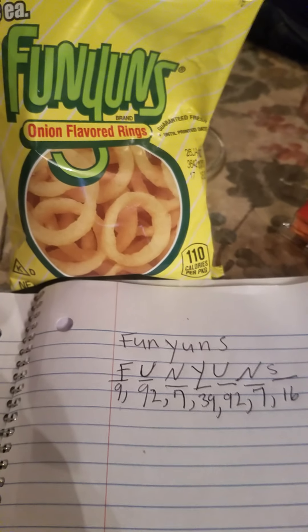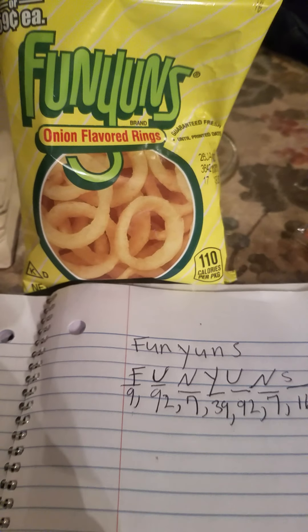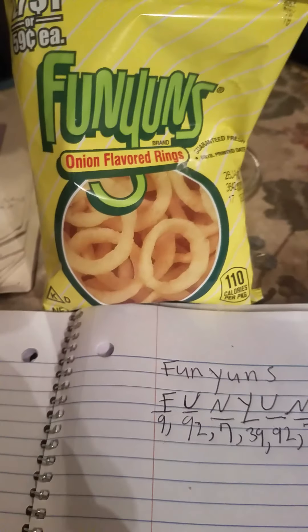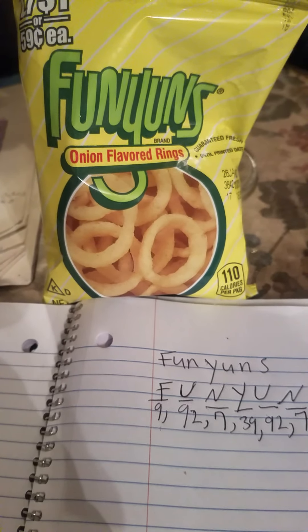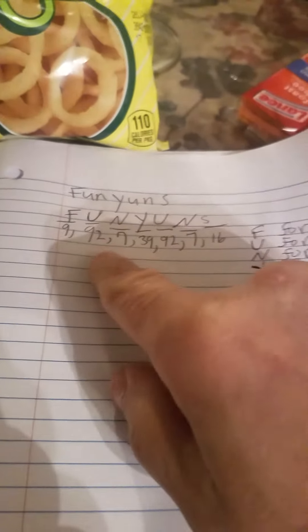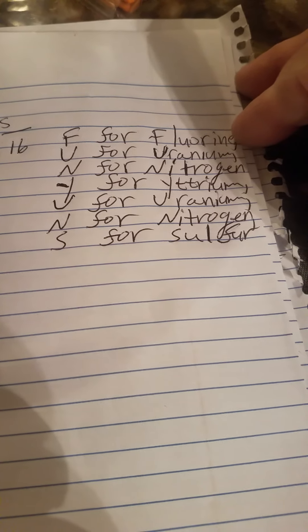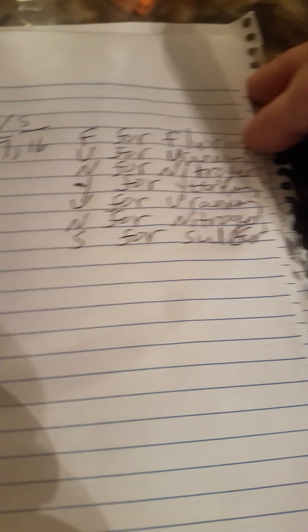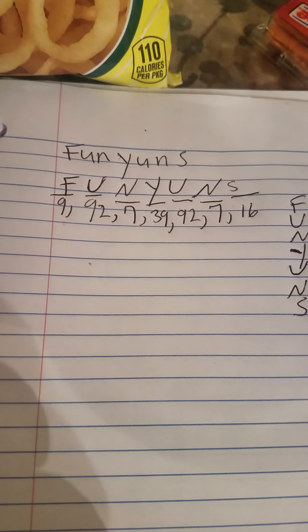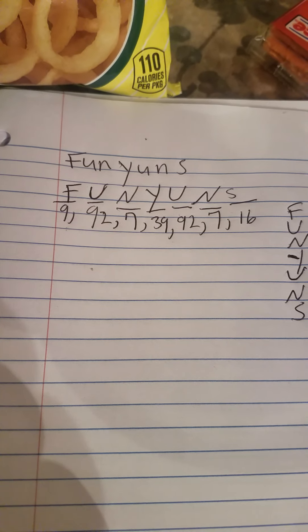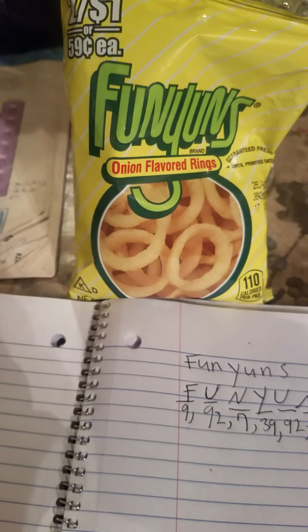So point to it next time you have a bag. Before you eat it, see if you can break down the chemical symbols. And if you want to add the atomic numbers, here they are — the element name, the chemical symbol, and the atomic number. You got it? And here are the Funyuns.